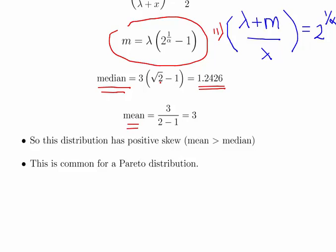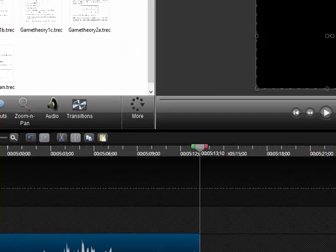This distribution has a positive skew. The mean is greater than the median. And this is what to expect from Pareto distribution or any type of distribution like this, a long tailed distribution with a long positive tail. That's grand. That's it.